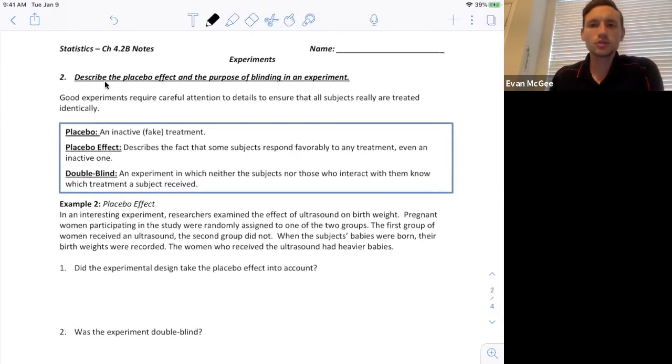The next objective is to be able to describe the placebo effect and the purpose of blinding in an experiment. So good experiments pay close attention to detail and ensure that all subjects are treated identically. That's that concept of control and one way we have to do that is by using a placebo. A placebo is just a fake treatment or an inactive treatment.